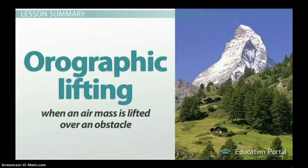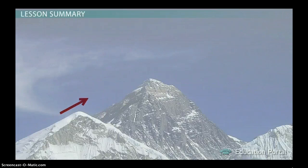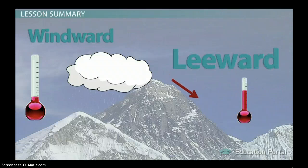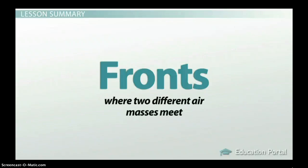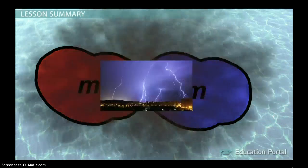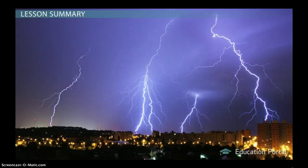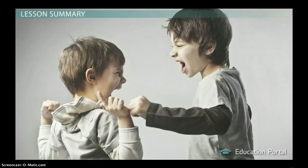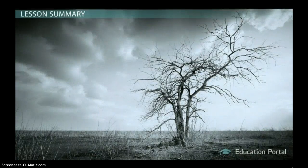Orographic lifting is when an air mass is lifted over an obstacle, usually a mountain. The warm air is lifted and as it rises, it cools and expands. The water in the air creates a cloud and rain over the windward side of the mountain where the wind initially blows up, and dry conditions on the leeward side. Fronts occur where two different air masses meet, and the type of front depends on which air mass is advancing onto the other. Along the zone of contact, we get changes in weather such as storms, rain, and clouds. Fronts are like a disagreement between two people with opposing viewpoints — one may eventually win, but the argument itself creates serious friction.